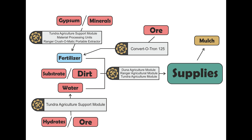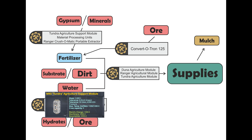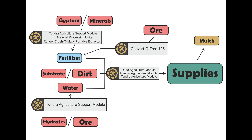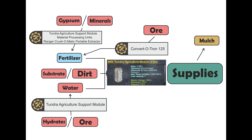The next step will be deciding whether you want to go with substrate or dirt farming and mine those resources. And the last thing you will need is water. Water can be either mined directly if you're lucky, or it can be extracted from hydrates or stock ore. Both hydrates and stock ore can be transformed into water in the Tundra Agriculture Support Module. Once you have all three resources — fertilizer, water, and dirt or substrate — you can start producing supplies in either the agriculture module from the Duna, Ranger, or Tundra series.